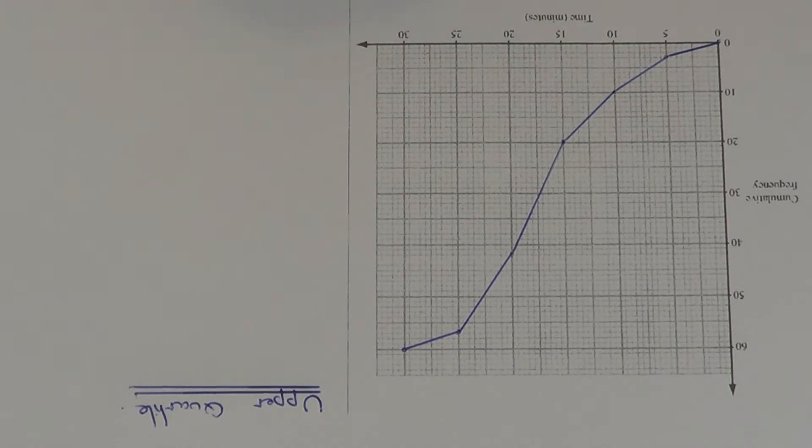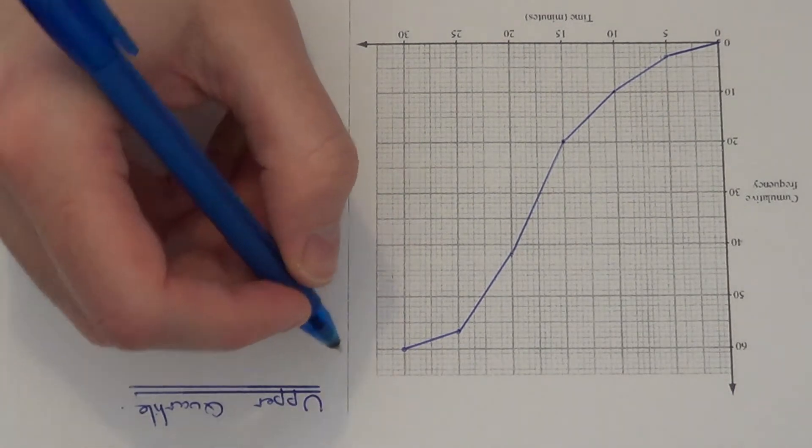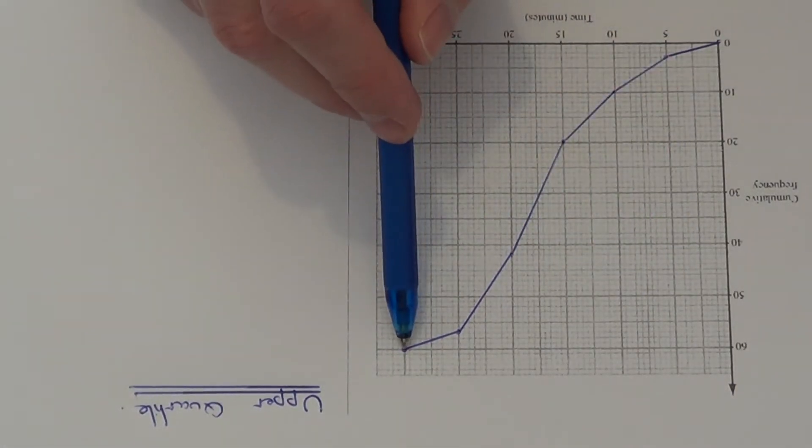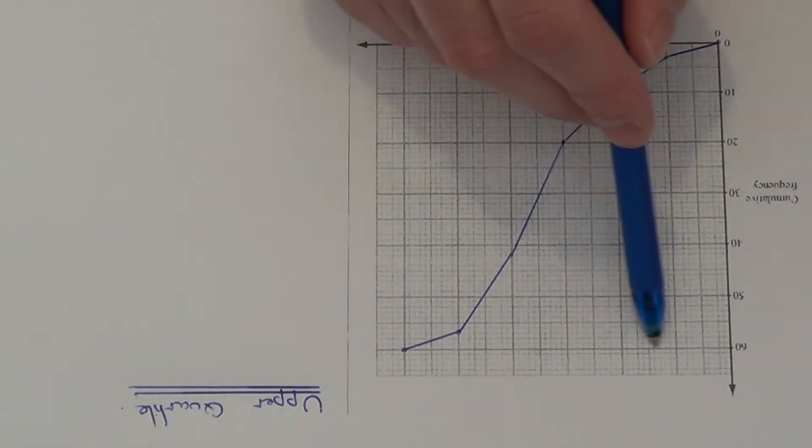So what we have to do to work out the upper quartile, we need to do three quarters of the total frequency. So the total frequency is 60, so this is the number at the top of the graph.